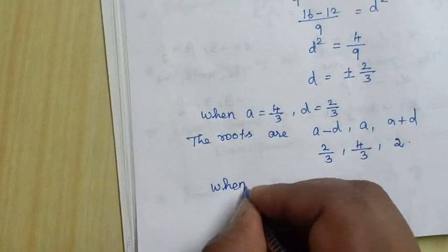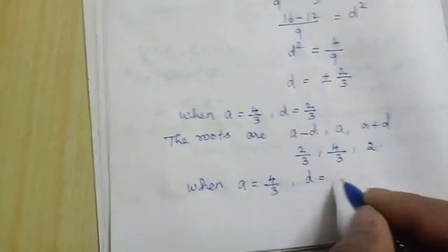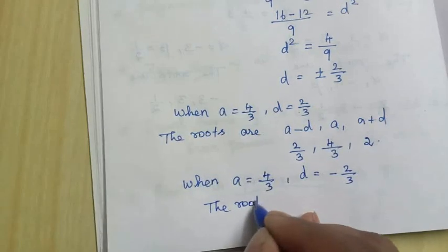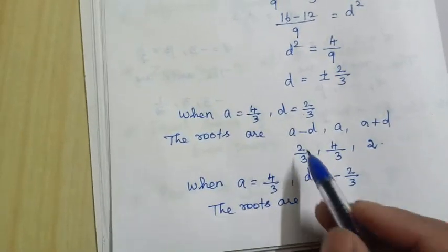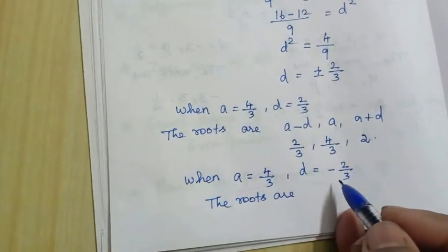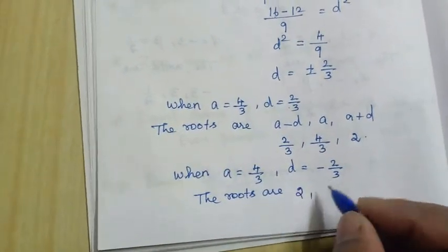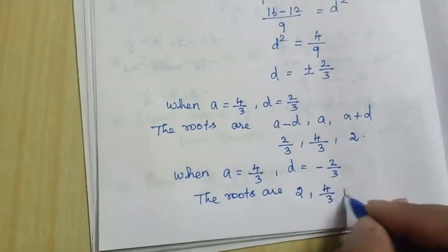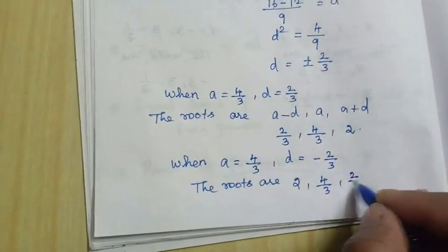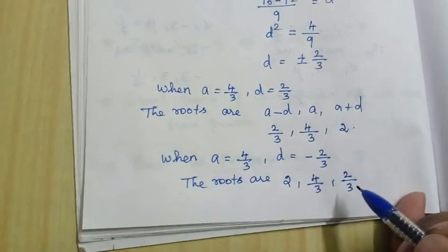When a equals 4 by 3 and d equals minus 2 by 3, the roots are: a minus d equals 4 by 3 minus of minus 2 by 3 equals 4 by 3 plus 2 by 3 equals 2; a equals 4 by 3; and a plus d equals 4 by 3 minus 2 by 3 equals 2 by 3. Therefore, the roots of the given equation are 2, 4 by 3, and 2 by 3.